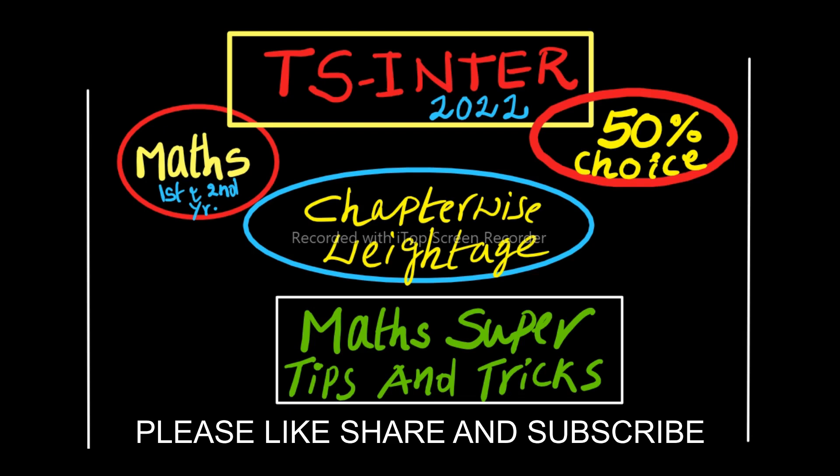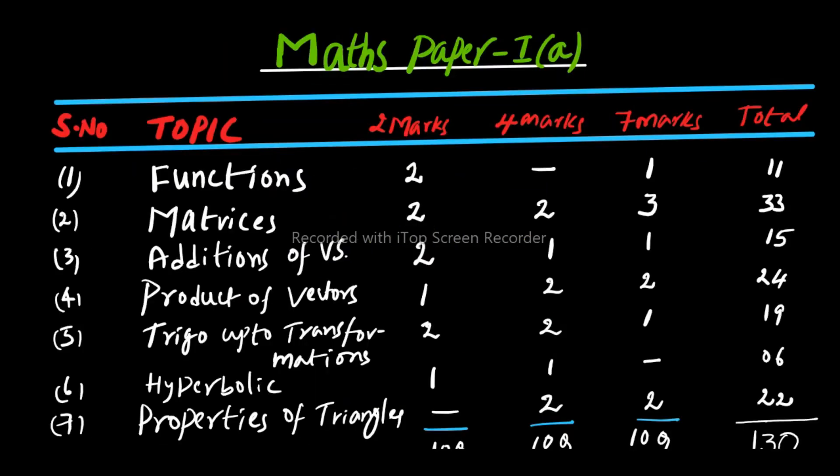In today's video I'm discussing the maths chapter-wise weightage for 1A, 1B, 2A, and 2B — that is 2 marks, 4 marks, and 7 marks. There is a 50 percent choice in Section 2 and Section 3; Section 1 has no choice. I already uploaded a video about the 30 percent deleted syllabus for 1A, 1B, 2A, 2B — the link is in the description or click the I button on the top corner.